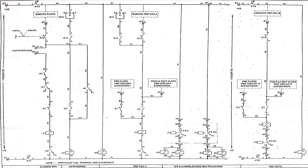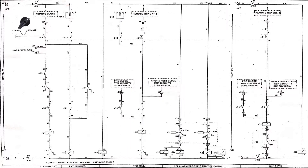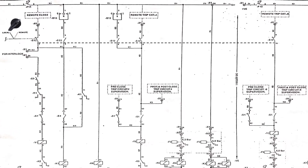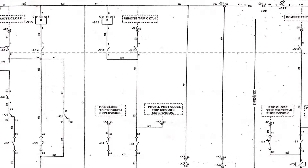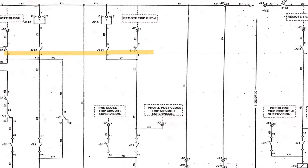Starting from the top, here is the switch used for remote and local wiring. S12 switch is connected as shown by the dashed line. Whenever the switch changes its position, its contacts will change — NO will become NC and NC will turn into NO, which we will see later in this diagram.